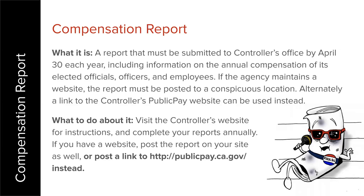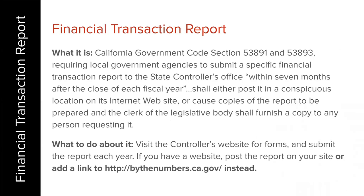A couple of other items that are easy to post: your two state controller reports. Hopefully you're already doing these — they're required, you fill them out every year and send them to the state controller. You also need to post them to your website, or you can link to the state controller's public pay website. We suggest doing that if possible, because you don't have to update your link every year. The same applies to the financial transaction report, which goes to the state controllers and gets posted to bythenumbers.ca.gov — just link over to that website.